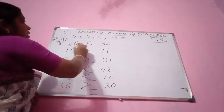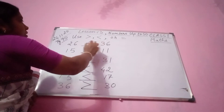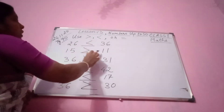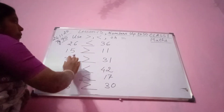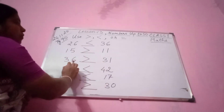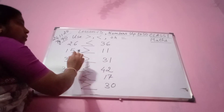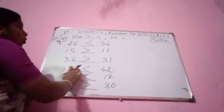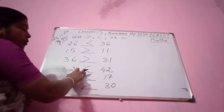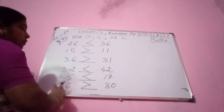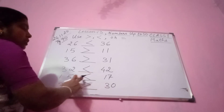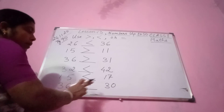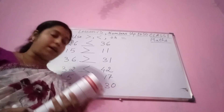Once again — 26 or 36: 26 is smaller than 36, we have put this sign. 15 or 11: 15 is bigger than 11, we have put the bigger sign. 36 or 31: 36 is bigger than 31, we have put this sign. 32 or 42: 32 is smaller than 42, we have put the smaller sign. 15 or 17: 15 is smaller than 17, we have put this sign. 36 or 30: 36 is bigger than 30. So we have done.